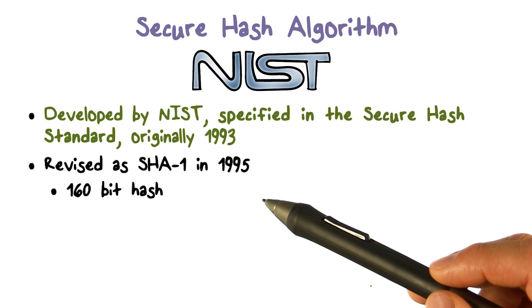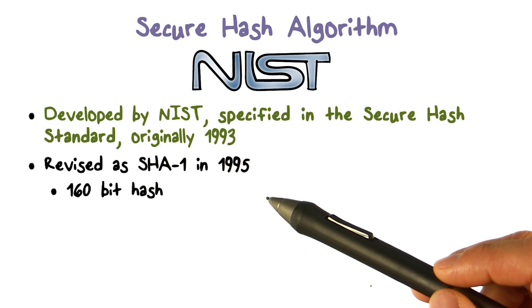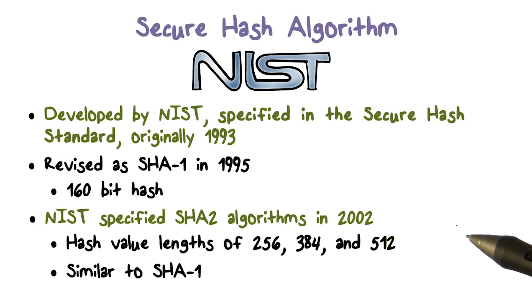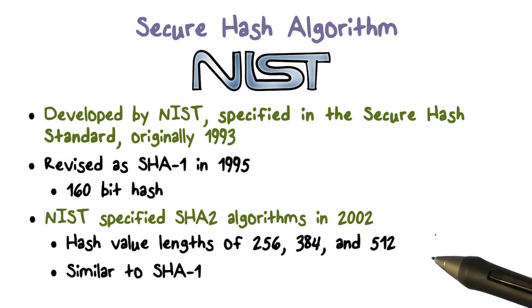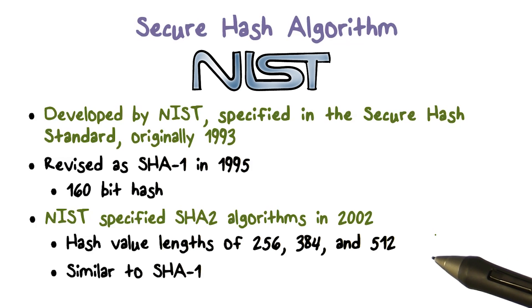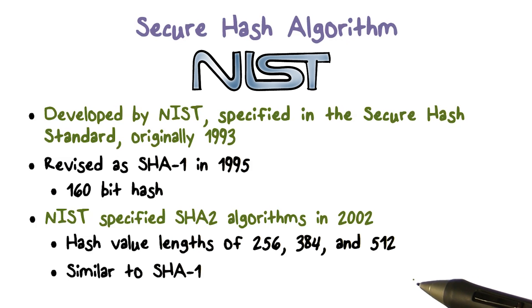SHA1 produces a hash value of 160 bits. Later, NIST revised the SHA standard and specified the SHA2 algorithms. These algorithms have key lengths of 256, 384, and 512 bits, and their operations are similar to SHA1.